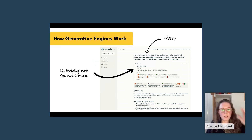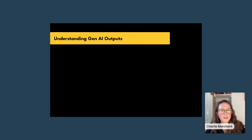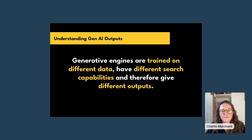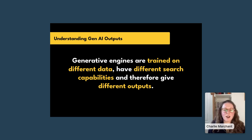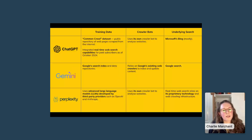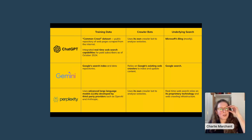It collates all of that information and gives you one combined answer — super smart. This means generative engines are trained on different data, have different search capabilities, and give different outputs from Google but also from one another.